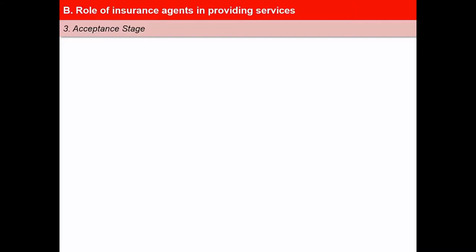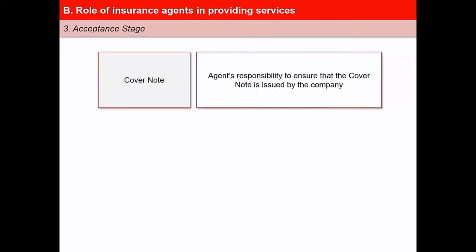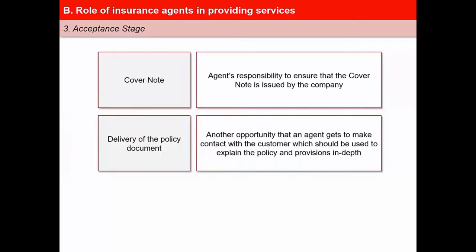The third stage where the agent has an important role to play is the acceptance stage. This stage itself is divided into three parts. The first part is the cover note, where the agent is responsible for ensuring that the cover note is issued by the company wherever applicable to the insured. The second part is the delivery of the policy document, which is another major opportunity for the agent to make contact with the customer. The agent should visit the customer and explain the policy, provisions of the document, and anything that is unclear to the customer.